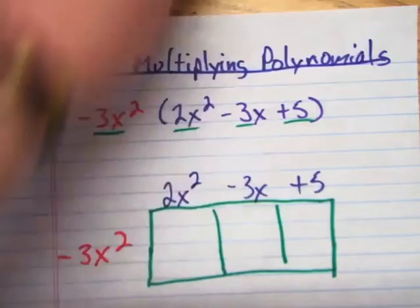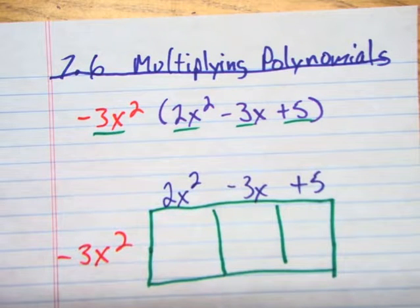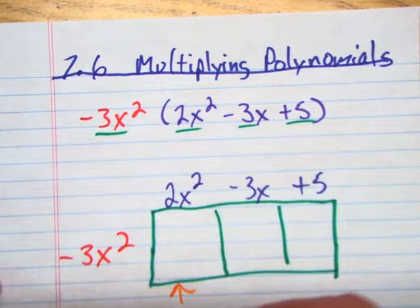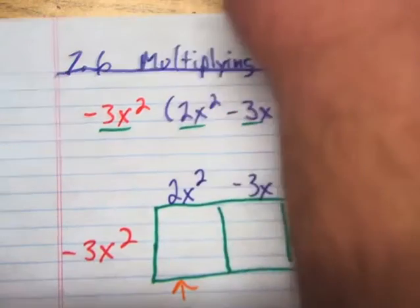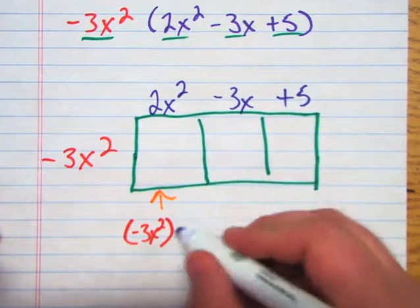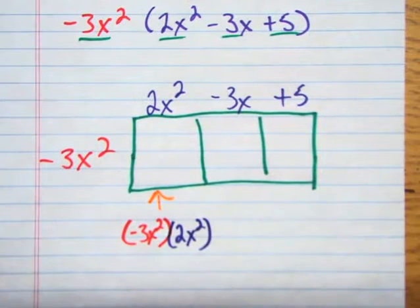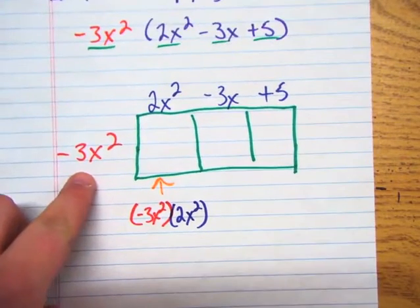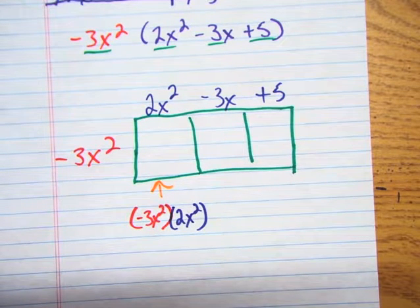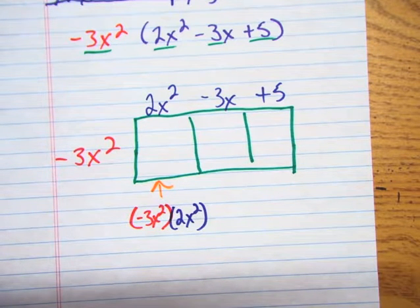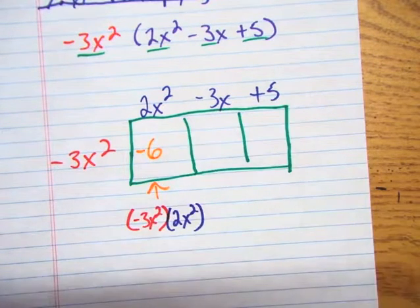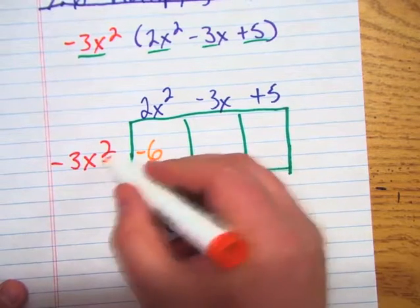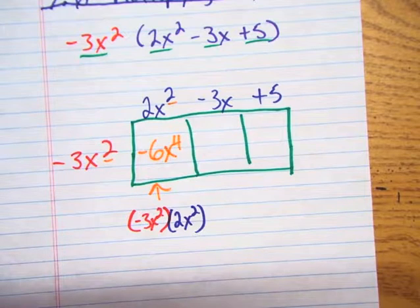And so what we're going to do is we're going to multiply the row by the column. So essentially, the answer that I'm going to put in here is just going to be negative 3x squared times 2x squared. Let me zoom out a little bit so you guys can see the whole thing. Now the way you do that is you multiply the number by the number and then the variables by the variables. So what's negative 3 times 2? Negative 6. Now what's x squared times x squared? X to the 4th. How do I get 4? We're going to add 2 and 2. So that becomes x to the 4th, right?